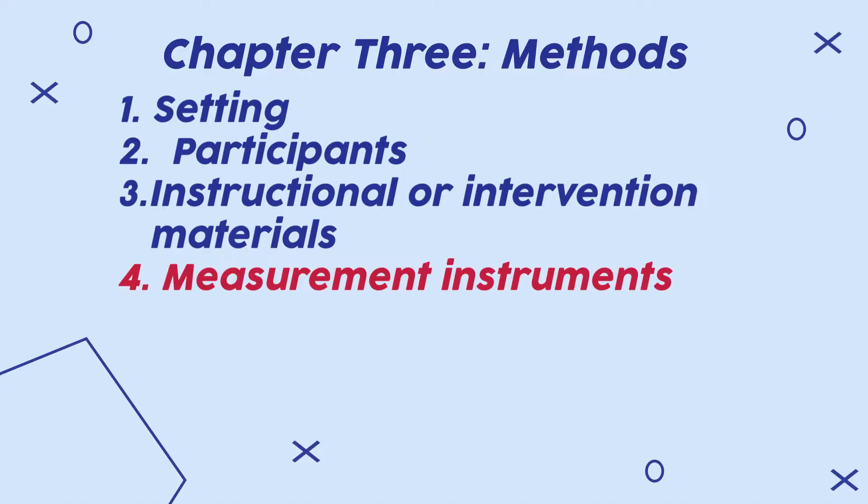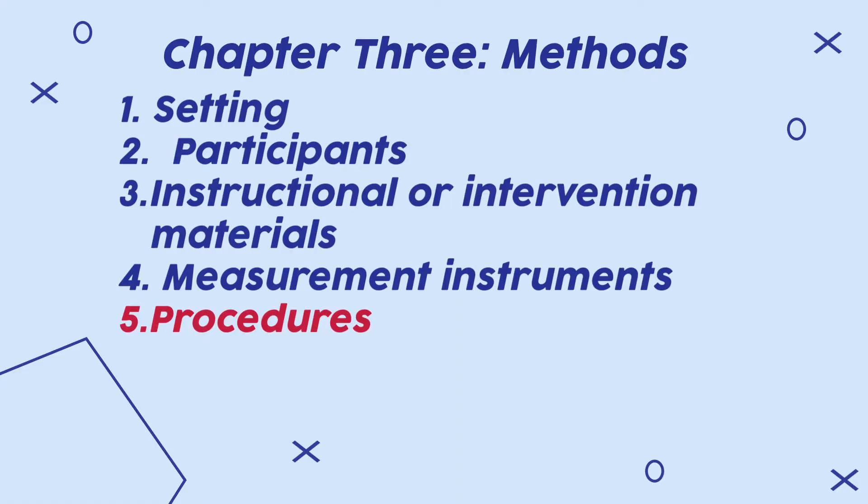Additional components of the methods chapter include: 3. Instructional or intervention materials — the strategies or materials used in conducting the study; 4. Measurement instruments — the tools used to collect data; 5. Procedures — a description of how you collected data or implemented the study; and 6. Data analysis — the qualitative or statistical techniques used to analyze your data. When writing the methods section, it's important to provide sufficient detail so that another researcher could effectively replicate your study.